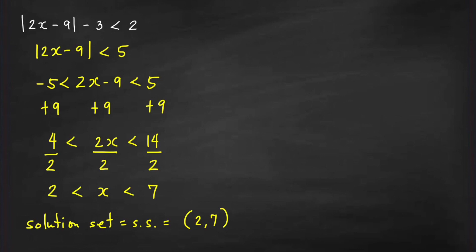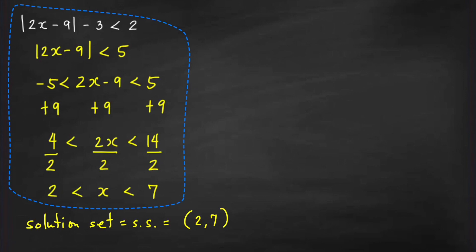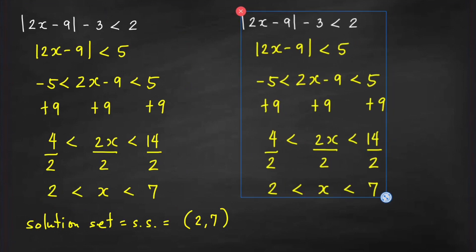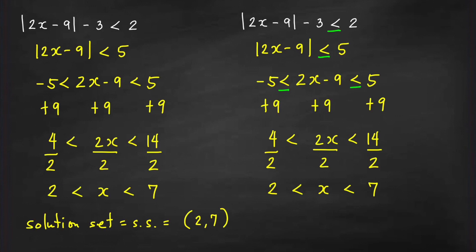What if we have less than or equal to instead of strictly less than? Our solution is analogous. We simply add equal signs throughout the compound inequality at each step, and the solution set becomes the closed interval [2, 7] instead of the open interval (2, 7).